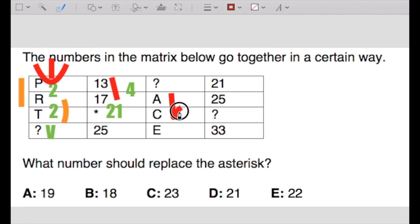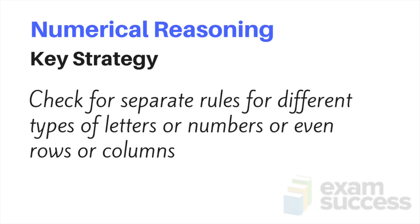You can see here from A to C, that's two. And from 21 to 25, that's four. So it looks like the numbers are going down the column by four, and the letters are going down by two. So it's important that we evaluate not just one column, but rather each individual column where you have different types of characters. So you've got the letters and you've got numbers. So what number should replace the asterisk? It should be 21. So the key strategy for numerical reasoning is always check for separate rules for different types of letters or numbers, or even rows or columns.